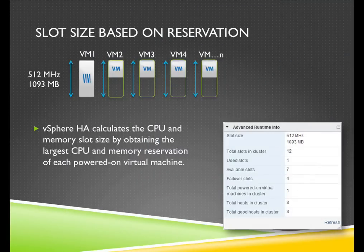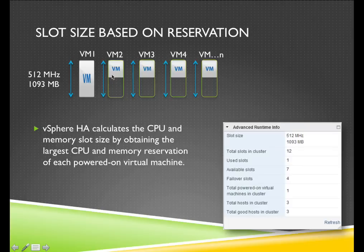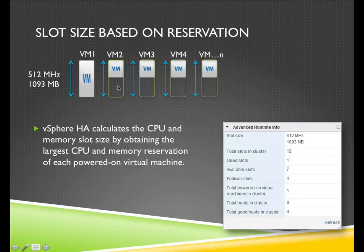On the other hand, if you create a reservation, the virtual machine reservation of the biggest virtual machine for CPU and memory will be used as the slot size. In this case, I have a 512 megahertz slot size for CPU and a 1 gigabyte slot size for memory, plus the virtual machine overhead. So in this case I have 12 slots in the cluster, 7 available slots, and 4 failover slots. Even though smaller virtual machines are not occupying the complete space needed by VM1, every powered-on virtual machine gets assigned that slot size — and a lot of small virtual machines will occupy the space only VM1 needs.